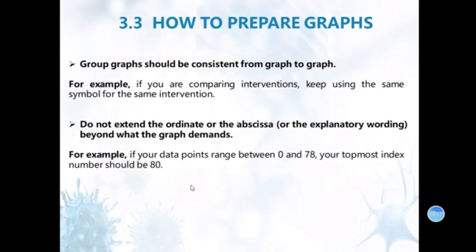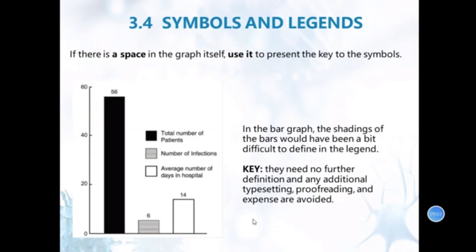And we also should pay attention. The group of graphs should be consistent from graph to graph. For example, if you are comparing interventions, keep using the same symbol for the same interventions. Do not extend the ordinate or the abscissa beyond what the graph demands. For example, if your data range reads from between 1 and 78, your top index number should be 80. 80 is better. Like this.